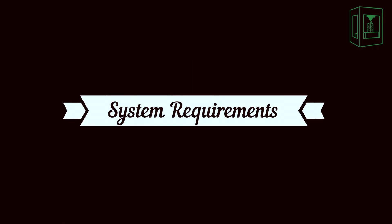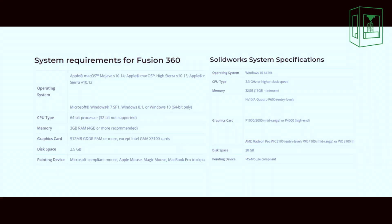Hi guys, I'm Maggie and this is Aria, and today we're going to be comparing SolidWorks and Fusion 360. SolidWorks and Fusion 360 are both 3D modeling software that can be used for engineering design, architecture, or hobby use. While they are both the same type of software, they each have distinguishing features that may make them more or less appealing to certain users depending on their intended use.